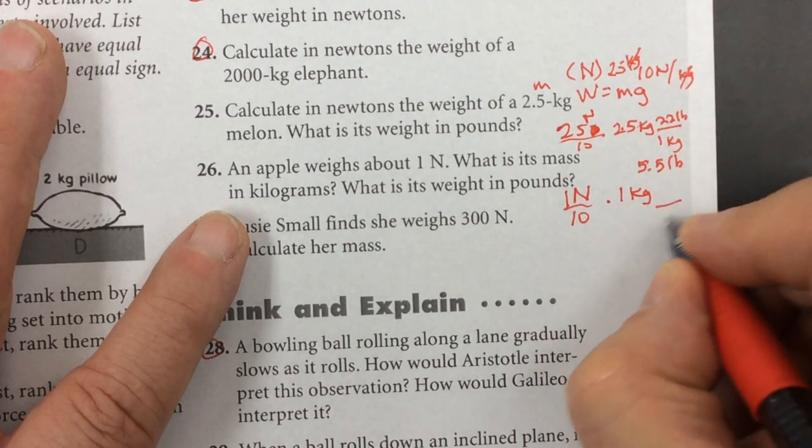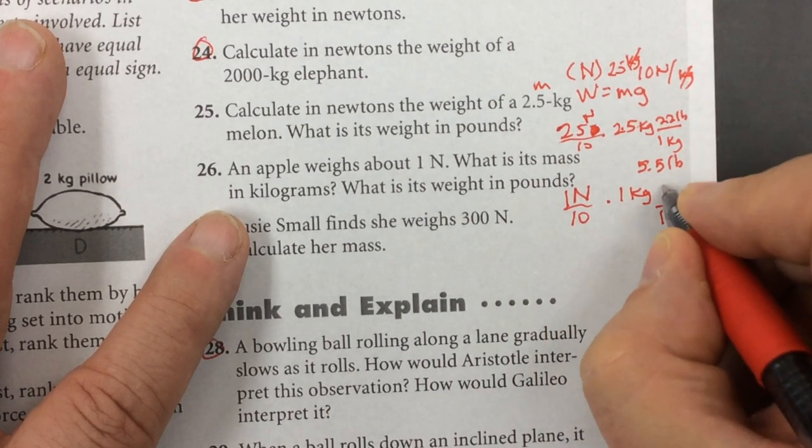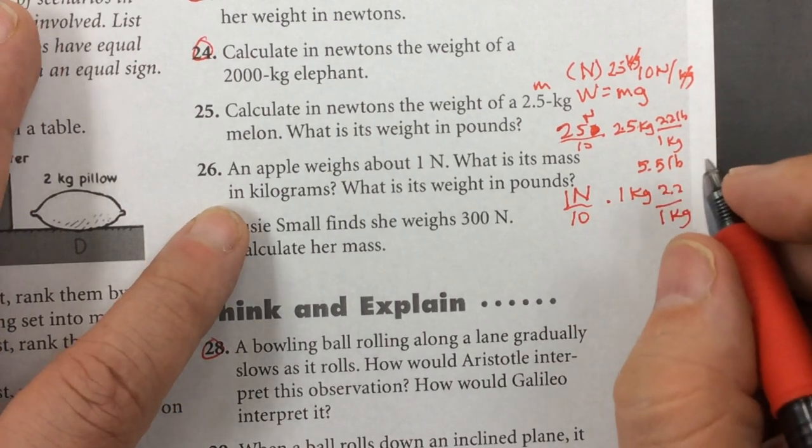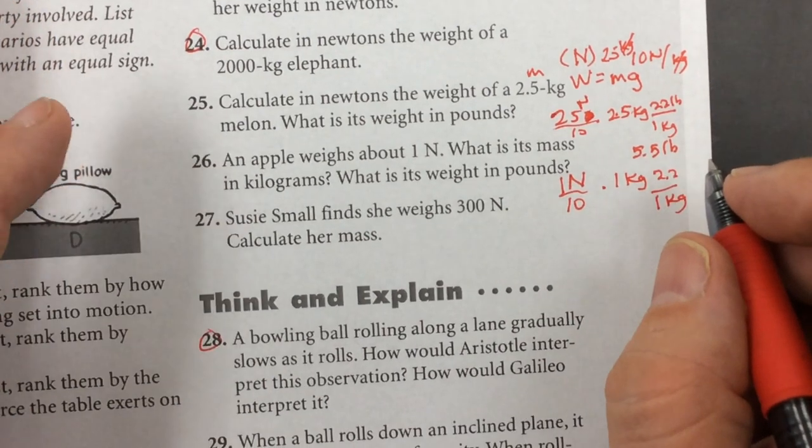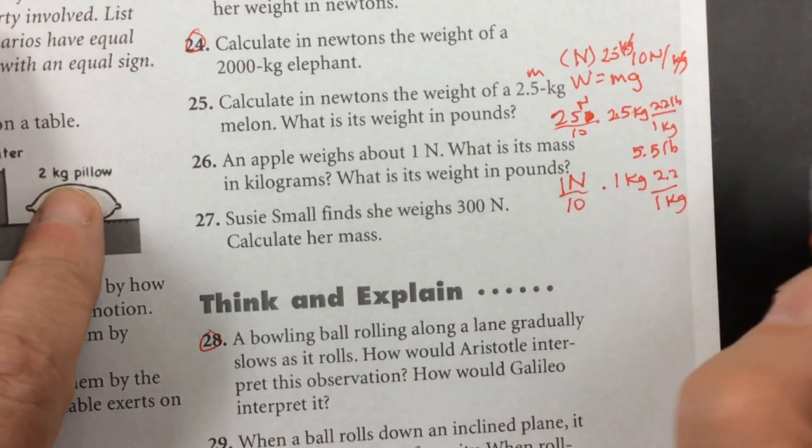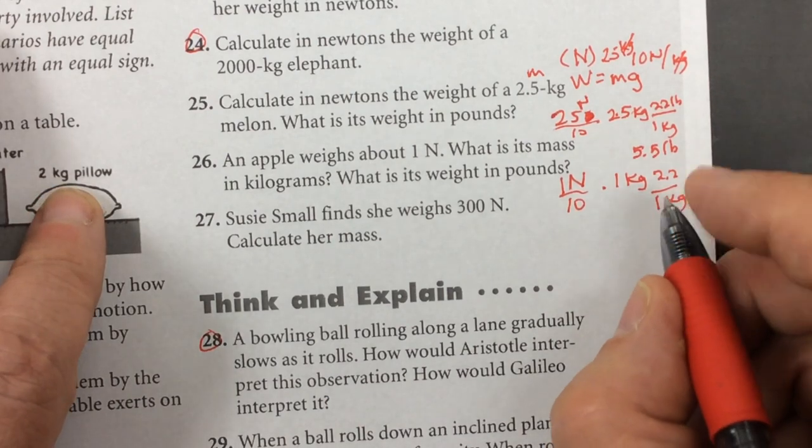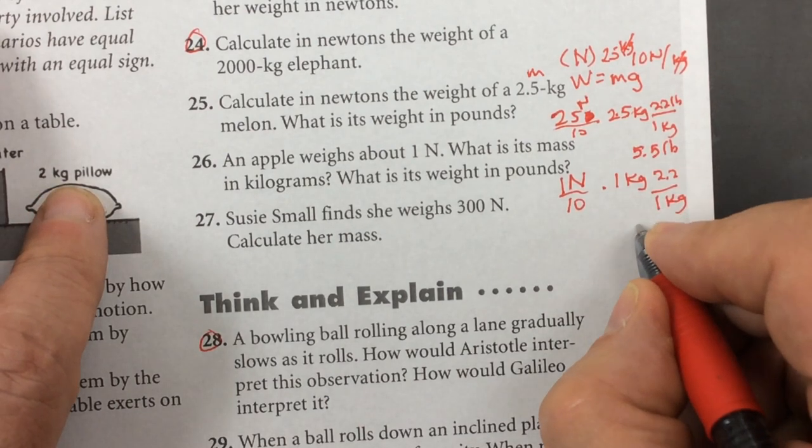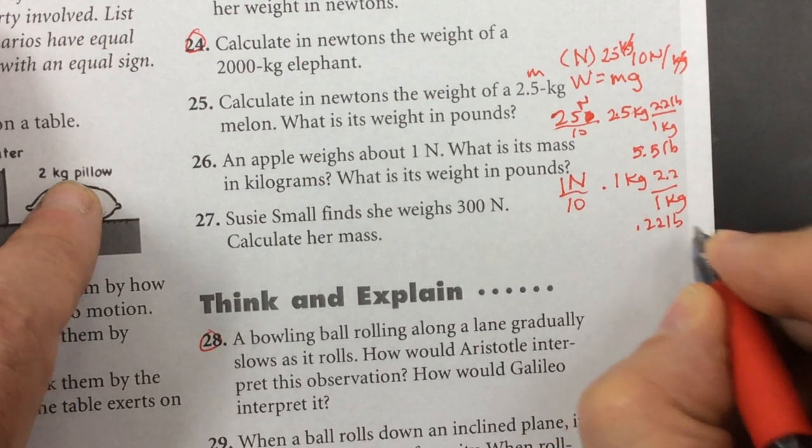Now what's its weight in pounds? 1 kilogram is 2.2 pounds. That's going to give you 0.1 times 2.2, that gives you 0.22 pounds.